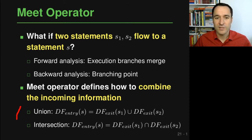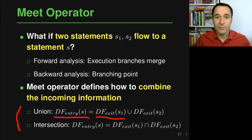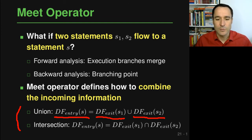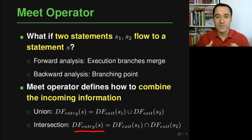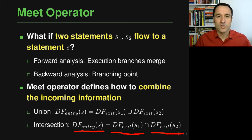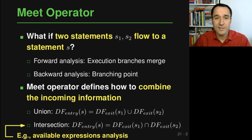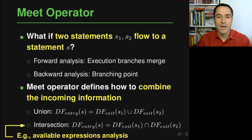There are two common choices for the meet operator: set union and set intersection. With union, ae_entry(s) = ae_exit(s1) union ae_exit(s2), putting both sets together. With intersection, ae_entry(s) = ae_exit(s1) intersect ae_exit(s2), keeping only elements present in both branches. For available expressions we use intersection, because we can only say an expression is definitely available if it is available on both incoming paths.